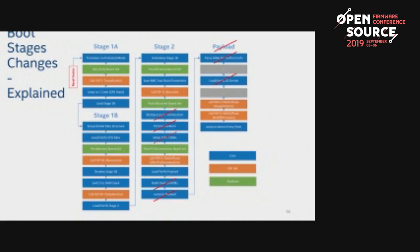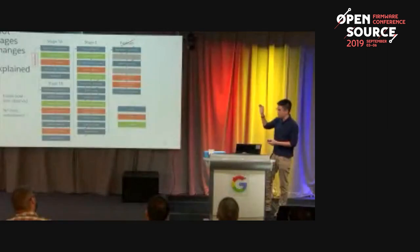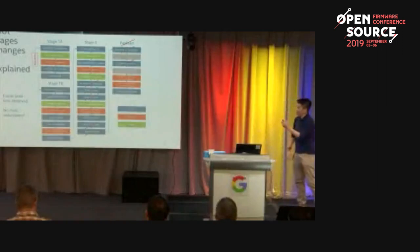We can also take out MP init and let the kernel handle multiprocessor initialization itself, saving even more time. The two key components: all these things have been removed, giving faster boot time — on QEMU we see around 300 milliseconds of boot time saved from stage 2 itself — and no more redundancy. There's no point doing PCI enumeration in stage 2 and then again in the kernel. The goal is to remove redundancy and improve boot time.